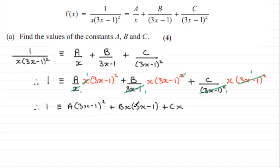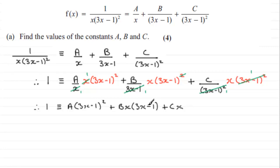To work out a, b, and c, we want to make one or more terms equal to zero to avoid simultaneous equations. Since this is an identity, any value of x is valid. We can choose x equal to one third, which makes the bracket (3x minus 1) equal to zero — three times a third is one, minus one gives zero — so those terms involving that bracket disappear, leaving us to find c.